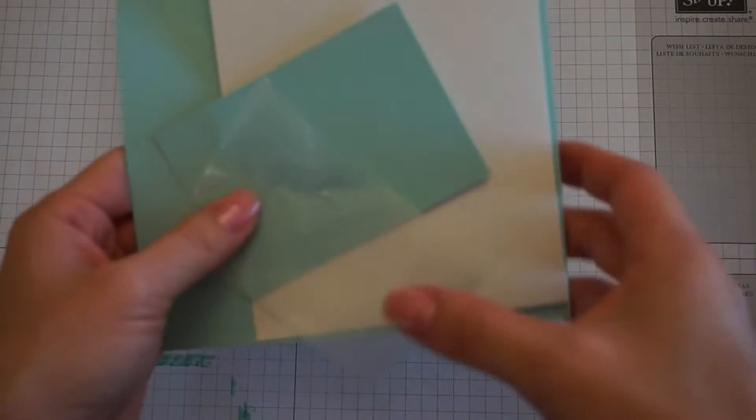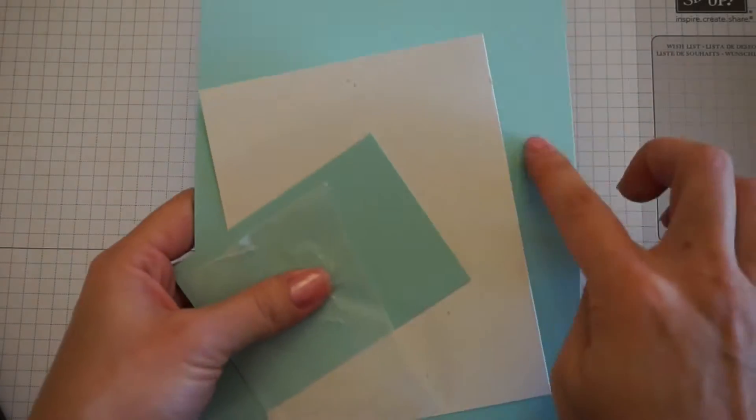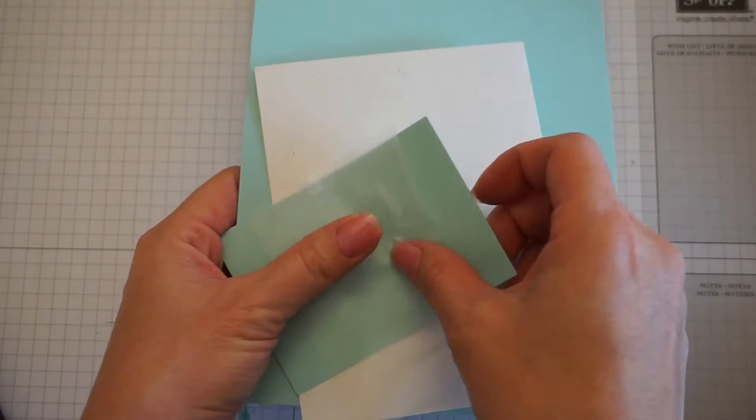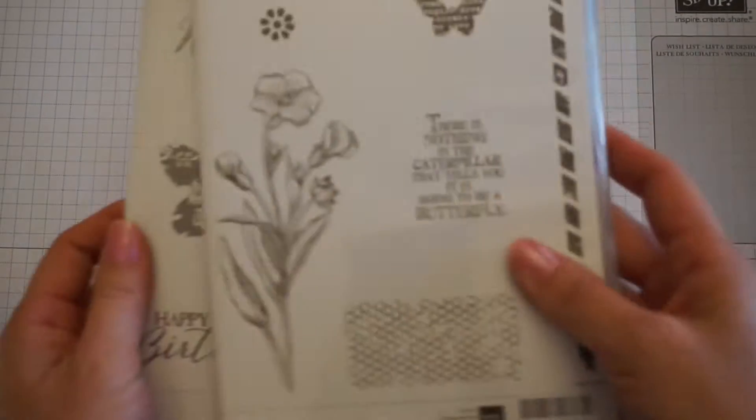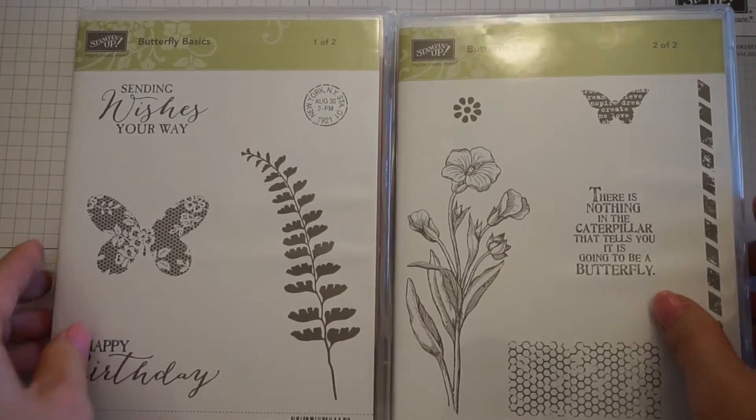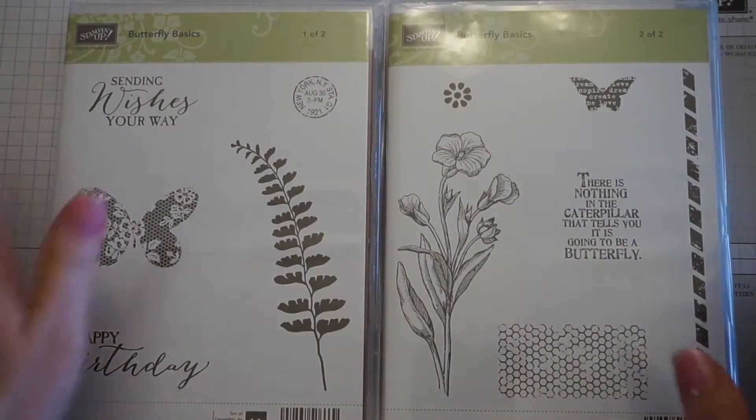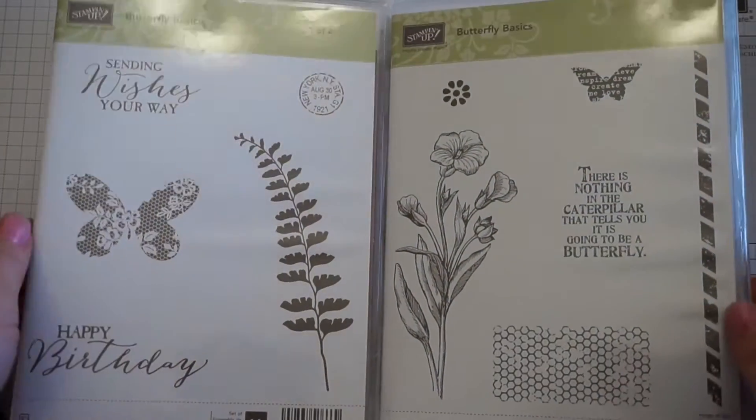In your card packet you will receive a set of cardstock in Pool Party, Naturals White, Pool Party, and then a piece of wax paper to cut out your butterfly. For this card we'll be using the Butterfly Basic Stamp Set. It comes with all of these stamps and this is my new favorite stamp set.